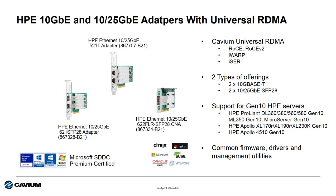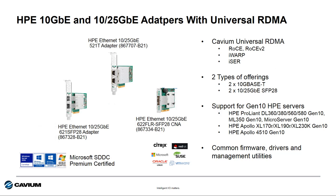Here's a look at those HPE adapters that support Universal RDMA from Cavium. We have the 10G Base-T option, the 521T, and then two of the SFP28 options, the 621 and the 622 FLR. These are supported in the Gen 10 servers — both the ProLiant DL/ML and the Apollo Gen 10 servers — and they're supported in all major OS environments and also have Microsoft Software Defined Data Center premium certification.